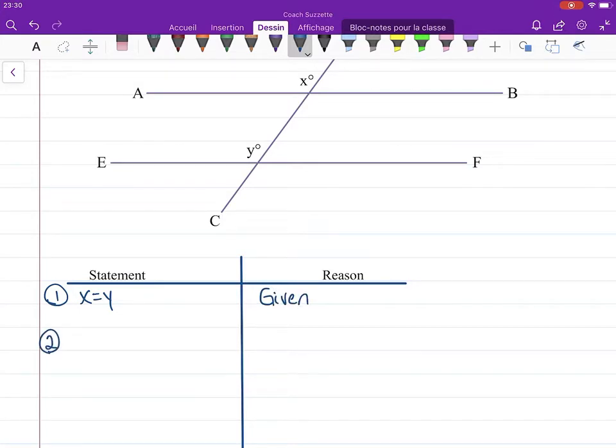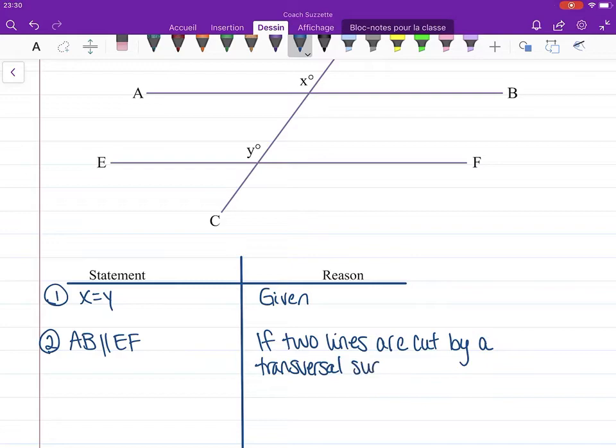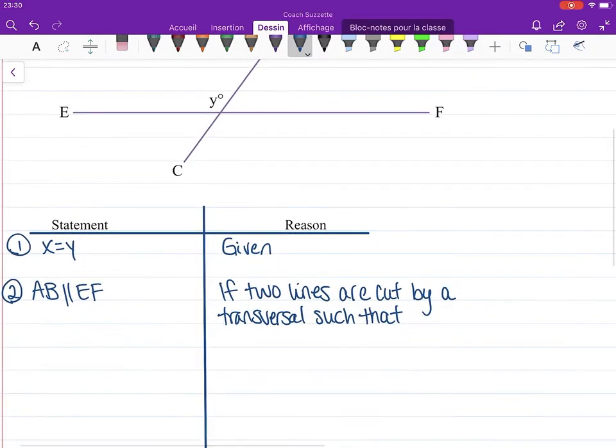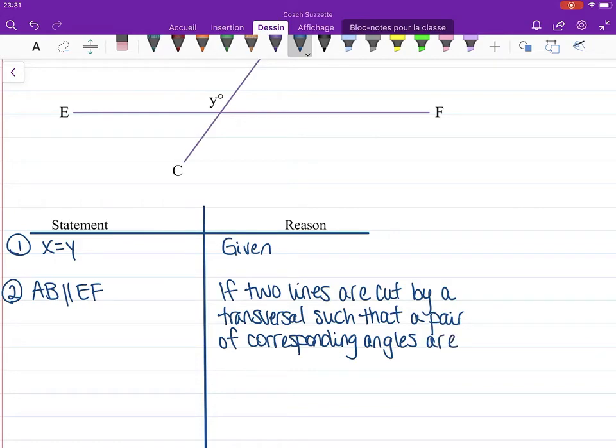For number two, we have that AB is parallel to EF because if two lines are cut by a transversal such that a pair of corresponding angles are equal in measure, then the lines are parallel.